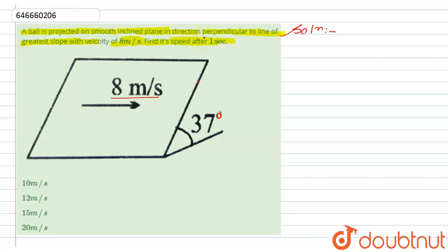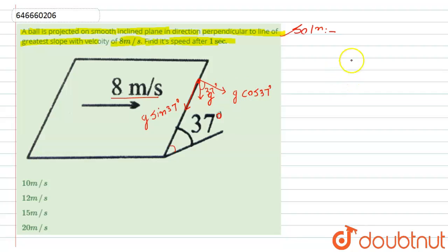To solve this, we first need to find the acceleration. The acceleration due to gravity acts in the downward direction and has two components: one along the surface of the inclined plane, which is g sin 37°, and one perpendicular to the plane, which is g cos 37°.